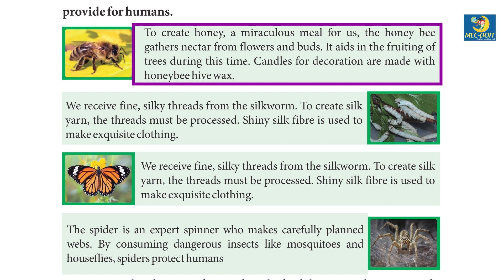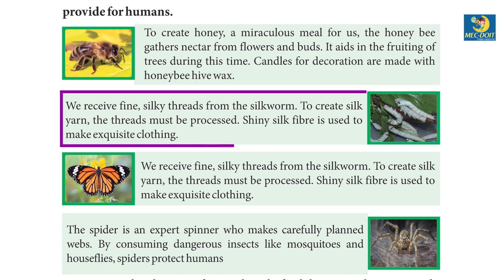The honeybee aids in the fruiting of trees. Candles for decoration are made with honeybee hive wax. Number two: we receive fine silky threads from the silkworm to create silk yarn; the threads must be processed.